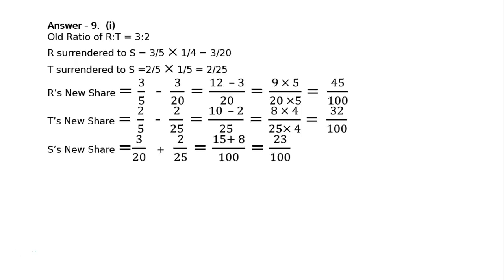S's new share: S is getting 3/20 from R and 2/25 from T. Hence S got 3/20 plus 2/25. LCM is 100: 15 plus 8 equals 23/100. Hence the new ratio of R to T to S is equal to 45:32:23.